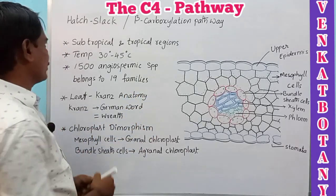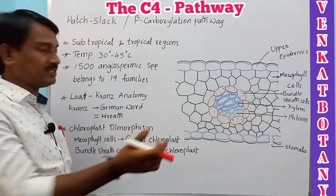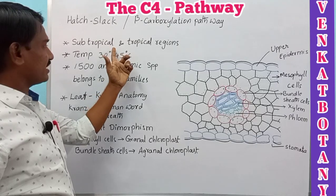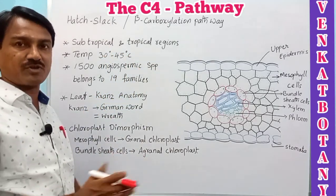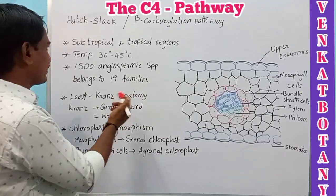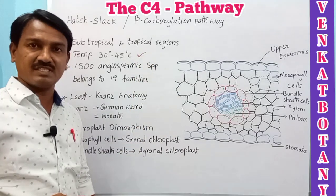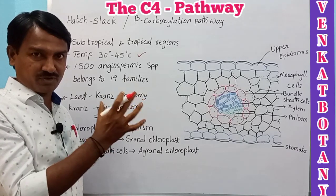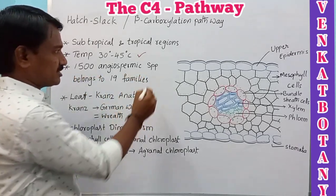C4 plants mostly occur in subtropical and tropical regions. They require a temperature of 30 to 45 degrees Celsius. The C4 pathway occurs in approximately 1500 angiosperm species belonging to 19 families.